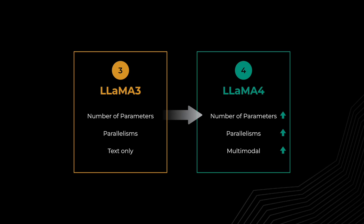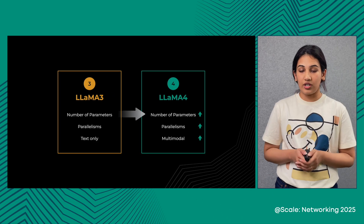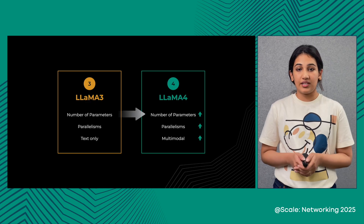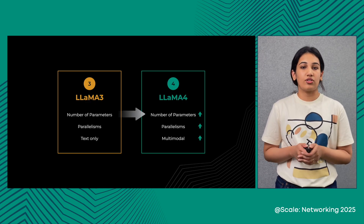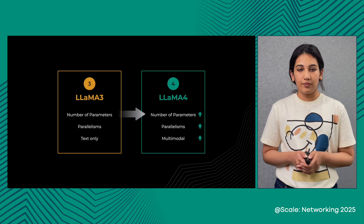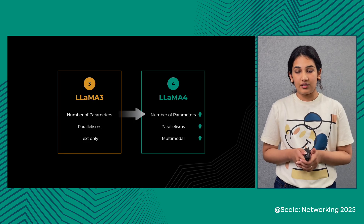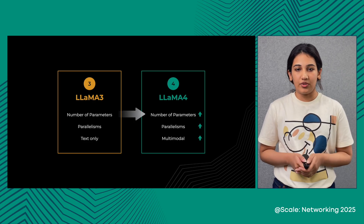With LAMA 4, we wanted to scale this even further. The largest LAMA 4 model that we have trained so far has nearly 2 trillion total parameters. In order to train such a colossal model, we had to expand our AI clusters, deploying over 100K GPUs.